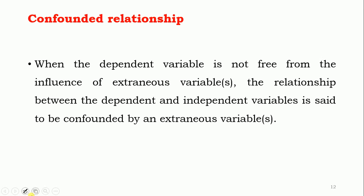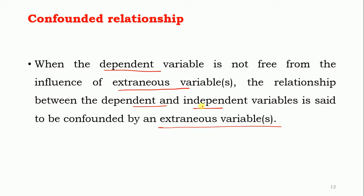Confounded relationship: when the dependent variable is not free from the influence of extraneous variables, the relationship between the dependent and independent variable is said to be confounded by external variables. You must remember that if the dependent variable is dependent on an external variable, then there is a confounded relationship; otherwise it will not be present.